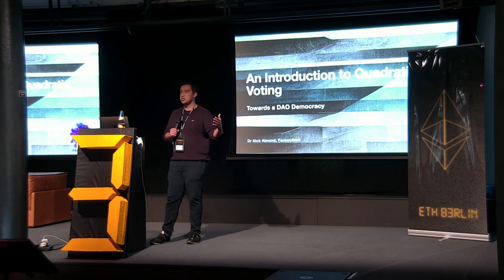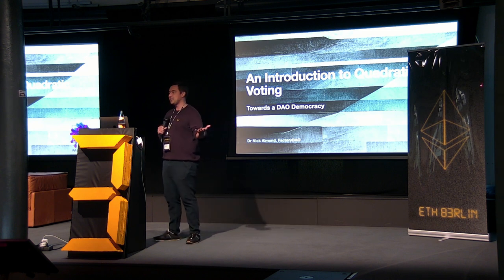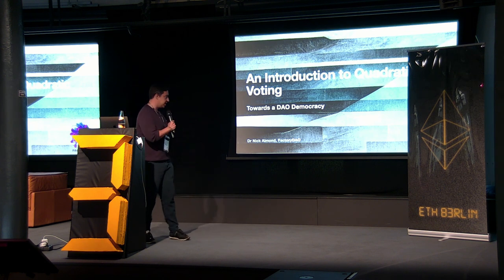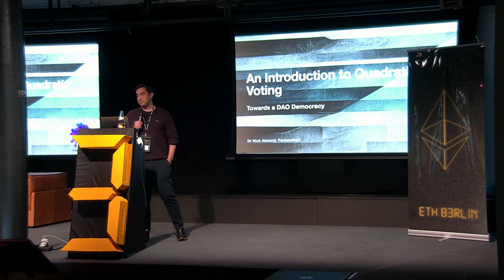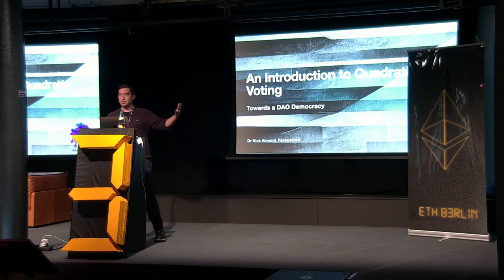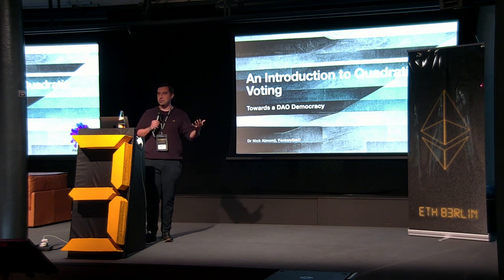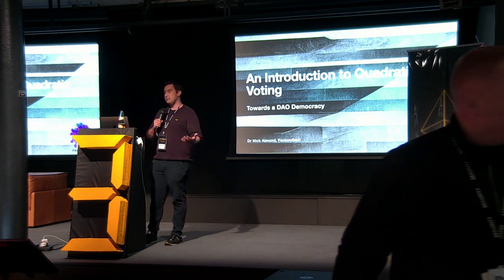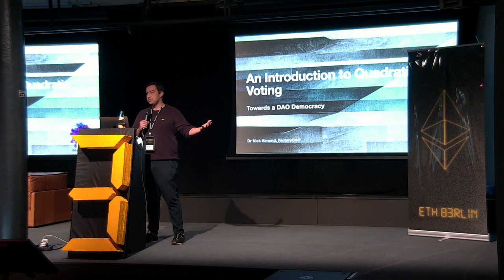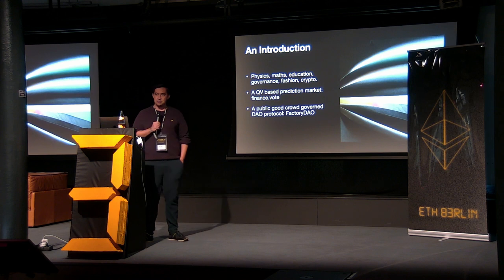Can you give me a show of hands if you've heard of quadratic voting prior to today? You're probably all thinking I'm just going to teach you the very basics of what it is. Where I want it to go - my little subtitle here - is towards a DAO democracy. What we're building at FactoryDAO is a kind of public good protocol for launching DAOs: launching tokens, doing voting, governance, creating a context where people can govern themselves autonomously. So it's going to be a bit more than an introduction.